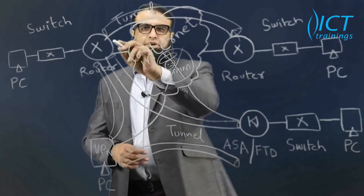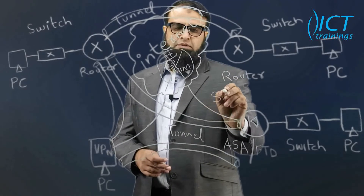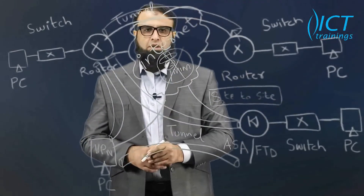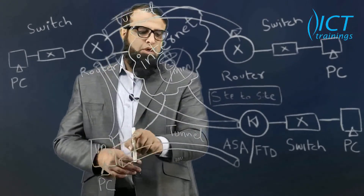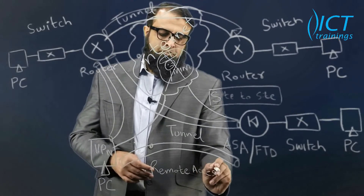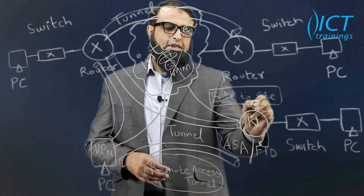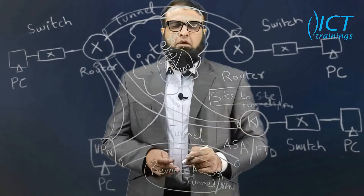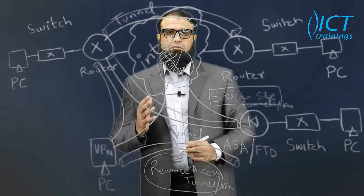The tunnels created between routers, or between a router and a firewall, are known as site-to-site tunnels or site-to-site VPN. The tunnel created between a PC and a router, or a PC and a firewall, is known as a remote access tunnel. So we can have remote access tunnels and site-to-site tunnels, and we can use this word interchangeably as VPN. To understand VPN technology properly, we need to study both site-to-site and remote access VPN technologies.